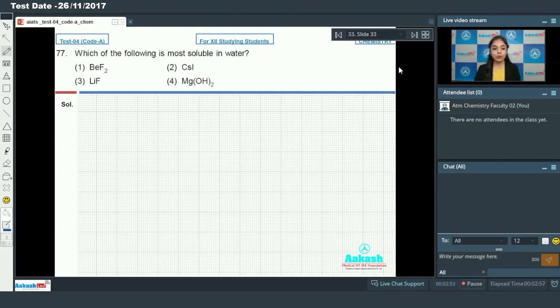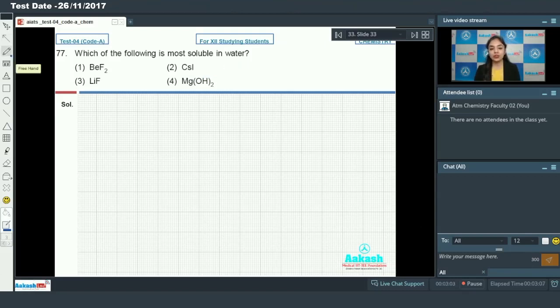Moving on to the next one. We have question number 77 which says that which of the following is most soluble in water? In a compound, hydration enthalpy compensates the lattice enthalpy. That compound would be more soluble in water. But if we look here, we have cesium iodide, lithium fluoride and magnesium hydroxide. They have a very high value of lattice enthalpy. So they are least soluble in water.